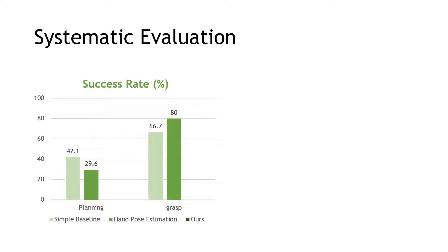but more often successful whenever it actually found a motion plan. The reason is that the hand pose estimation was often inaccurate and fluctuated, resulting in a harder motion planning problem. But in the few cases where it was successful, it was easy for the human to hand off the object.